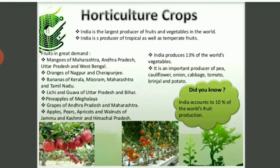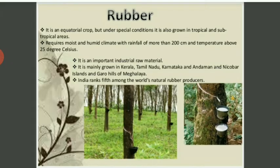Guava of Uttar Pradesh and Bihar; pineapple; grapes of Andhra Pradesh and Maharashtra; apples, pears, apricots and walnuts of Jammu & Kashmir and Himachal Pradesh. India produces over 30% of the world's fruits and vegetables. It is an important producer of peas, cauliflower, onion, cabbage, tomato, brinjal and potatoes.